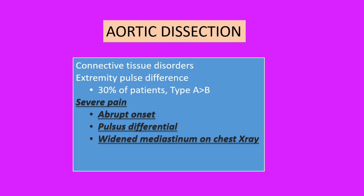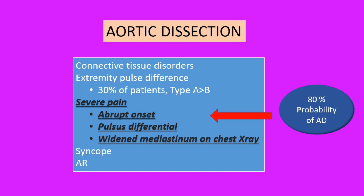The pain of aortic dissection is severe and abrupt in onset. Combined with pulse differentials and a widened mediastinum on chest X-ray, this indicates a more than 80 percent probability of dissection. These patients can also have syncope in up to 10 percent and aortic regurgitation in 40 to 75 percent of patients, mostly in type A aortic dissections. These are the key clues pointing toward the diagnosis of acute aortic dissection in patients presenting with acute onset chest pain.